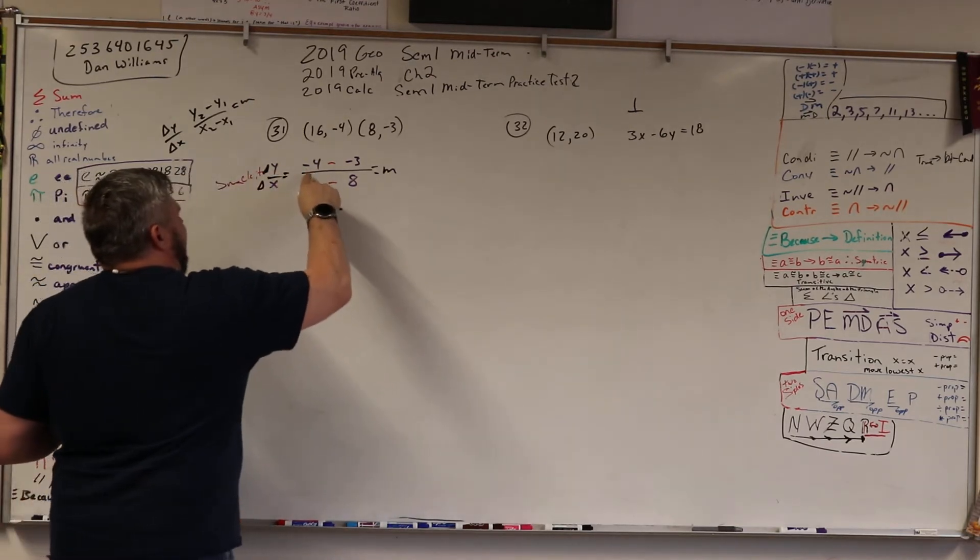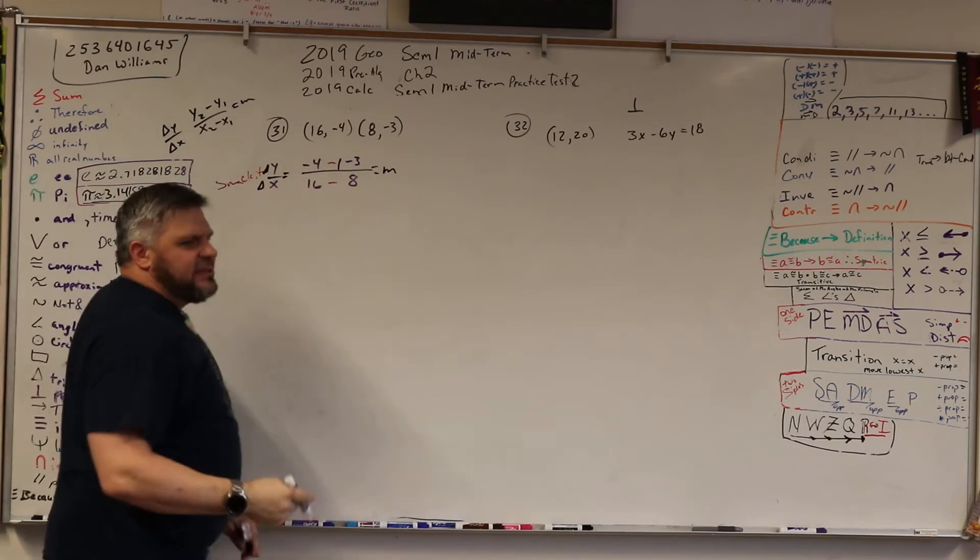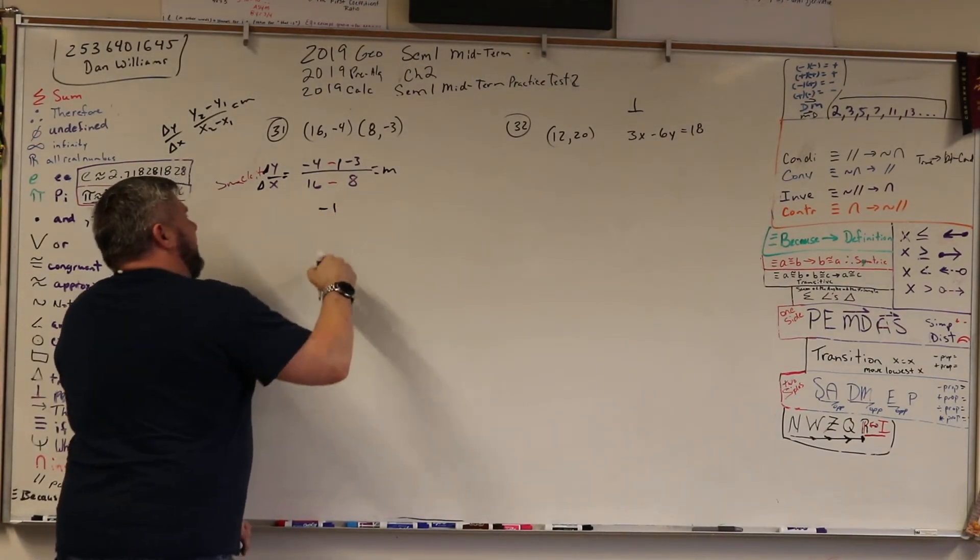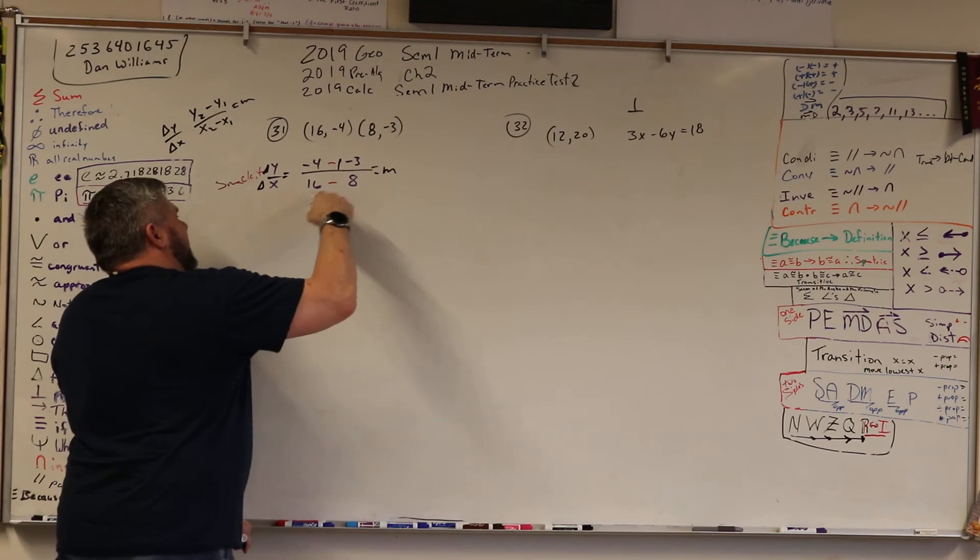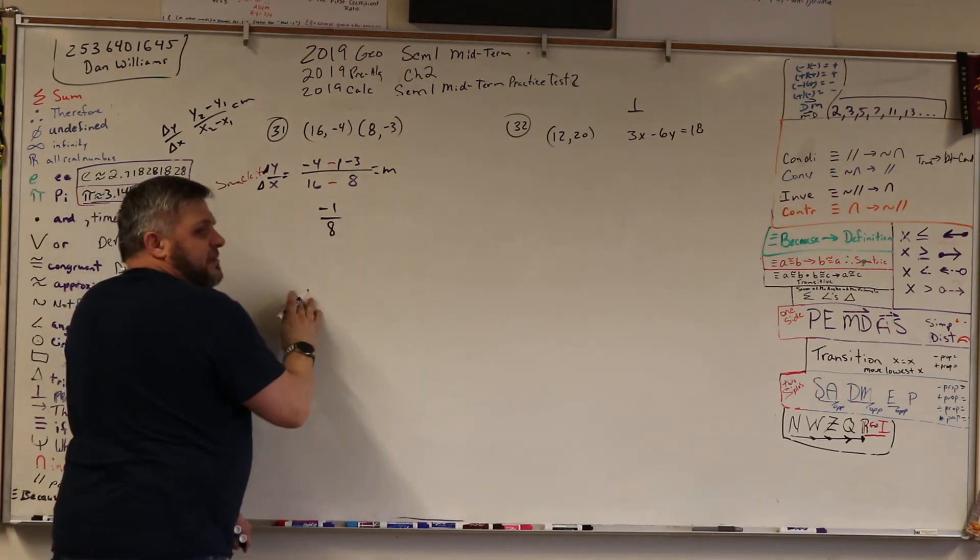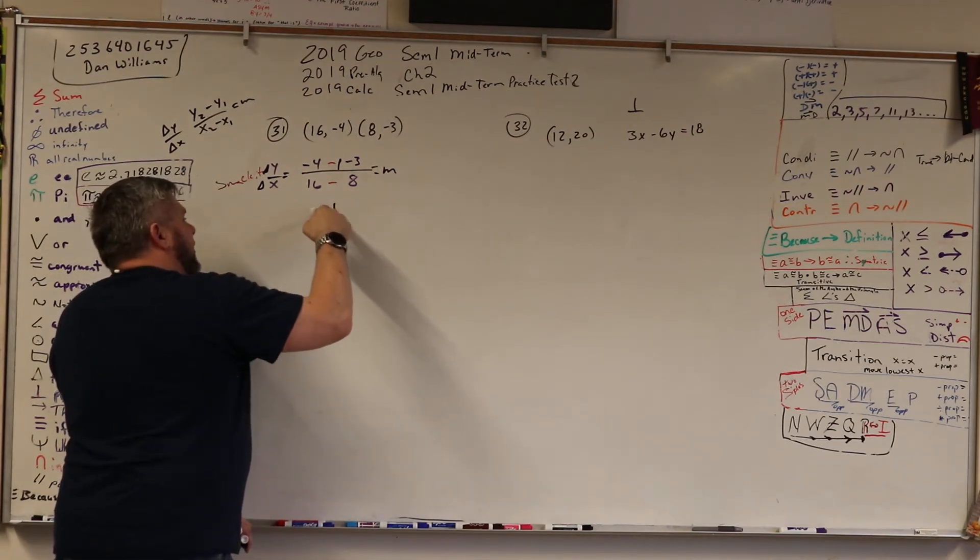So what is negative 4 minus minus? That's a plus. So negative 4 plus 3 is negative 1. 16 minus 8 is 8. So that's negative 1/8.